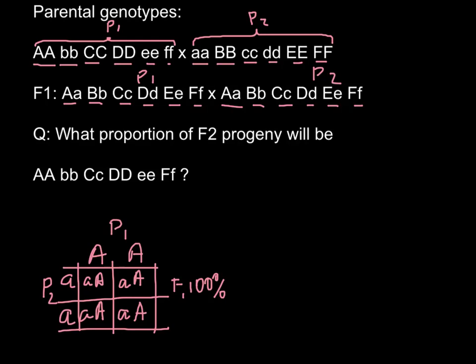What is the proportion of the F2 progeny that would be of this particular genotype? As you see, we have dominant, homozygous dominant, homozygous recessive, and heterozygous forms here. So how do we calculate this probability? Let me explain it once again with the use of the Punnett square. For example, this is going to be parent 1 here, and for loci A, this time we have capital A small a, and parent 2 also has capital A small a.